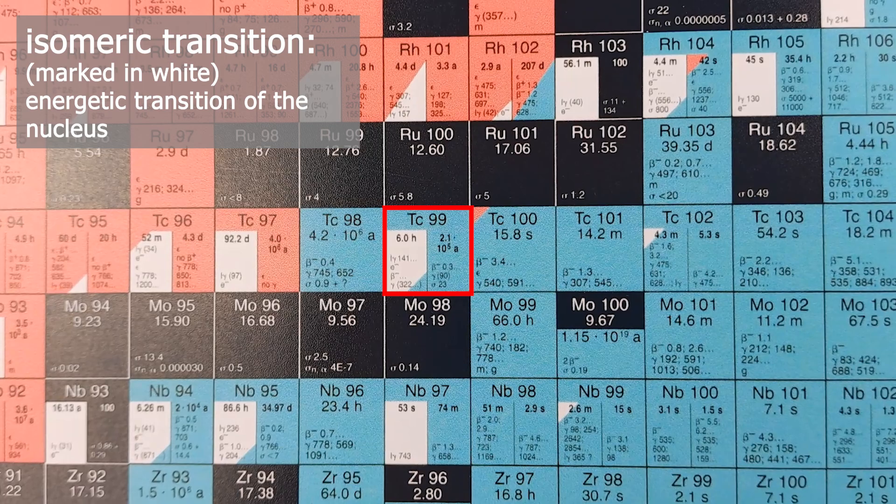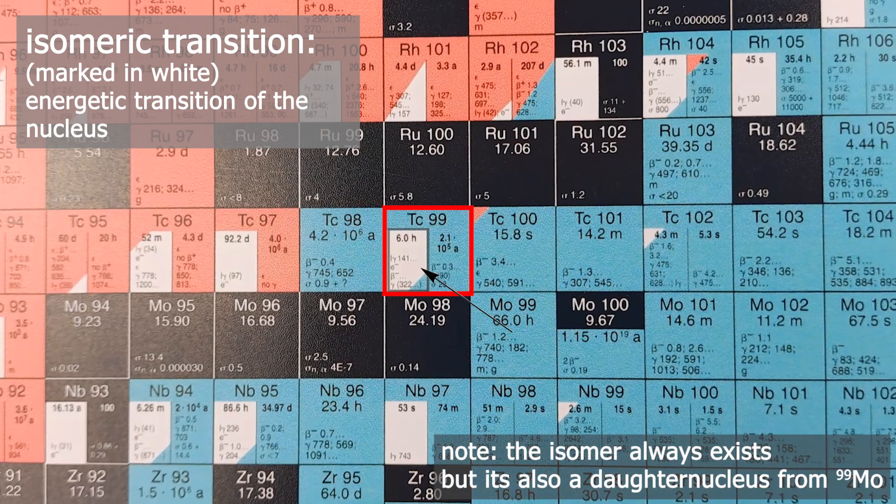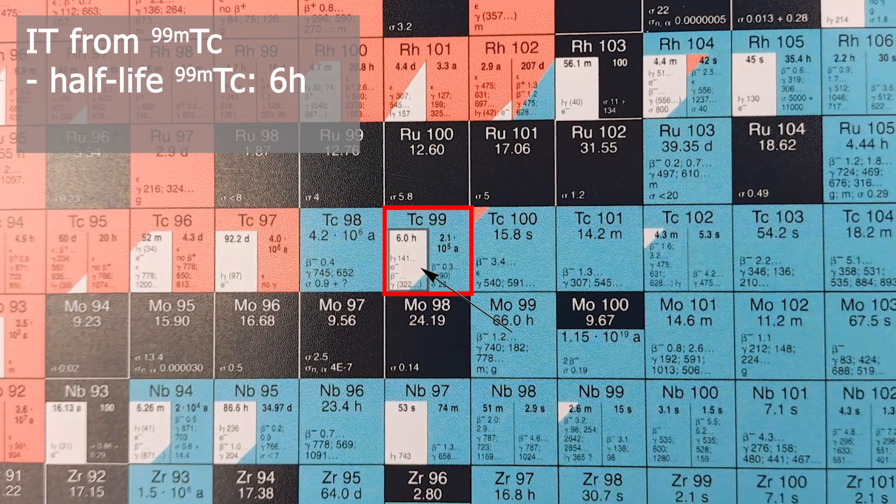It has an isomeric state formed by the beta minus decay of molybdenum-99. And this isomeric state of technetium then decays with a half-life of six hours and a probability of more than 95 percent, emitting a 141 kilo electron volt gamma quantum into technetium-99 or also sometimes marked as technetium-99g for ground state. This was a little foreshadowing of what's related to vertically divided tiles.